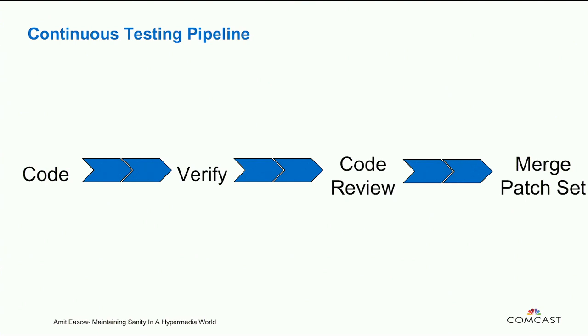That is how the continuous testing pipeline works. It's a little slower than what we used to do before, but it's a much more reliable way of writing code and testing. And all the engineers become experts in the code — there are no specialists; everybody are generalists.